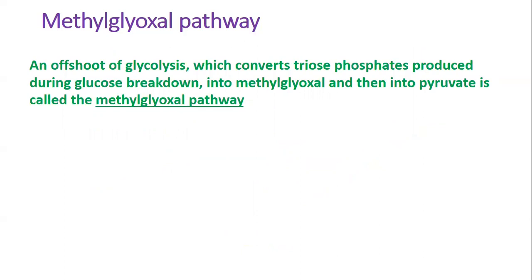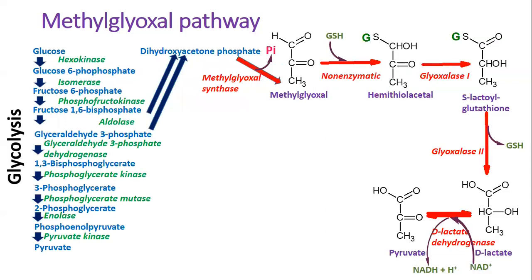The glycolytic pathway represents the most important and general source of methylglyoxal. It is estimated that 0.1 to 0.4% of the glycolytic flux results in methylglyoxal production. Furthermore, non-enzymatic methylglyoxal formation from glyceraldehyde-3-phosphate and dihydroxyacetone phosphate is about 0.1 mmol per day in red tissues. Generally, it looks as shown on this slide.